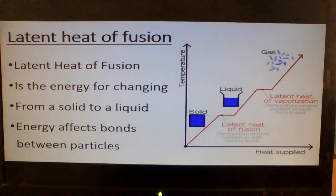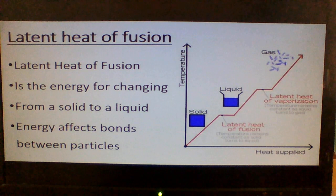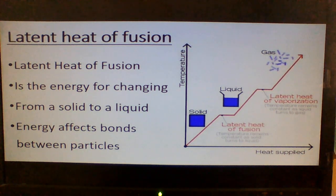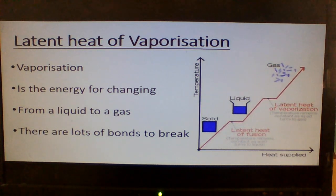Latent heat of fusion — look at your graph — is the energy for changing from a solid to a liquid. The heat energy supplied is being used to alter the bonds to turn from a solid to a liquid. Latent heat of vaporisation is the energy for changing from a liquid to a gas. There are lots of bonds to break, so you need a lot of energy.